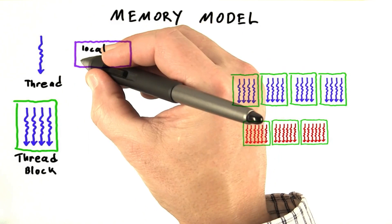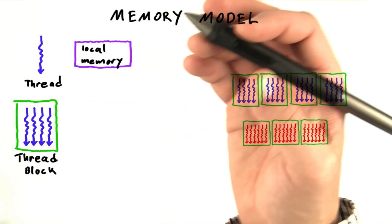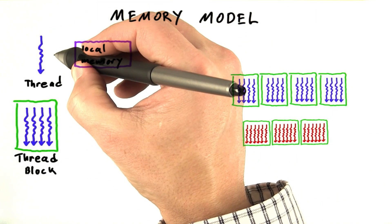So, every thread has access to something called local memory. And this is memory that's private to that thread, things like its local variables. So the thread can read and write from local memory.